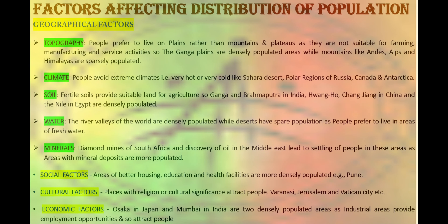There are four major factors which affect the distribution of population: geographical factors, social, cultural and economic factors, and many minor factors. Geographical factors include topography, climate, soil, water and minerals. People always prefer to live on plains rather than mountainous areas or plateaus, as plains are more suitable for farming, manufacturing and service activities. For example, the Ganga plains are the most densely populated areas of the world, while mountains like the Andes, Alps and Himalaya are sparsely populated. People also avoid extreme climates like the Sahara desert, polar regions of Russia, Canada and Antarctica.